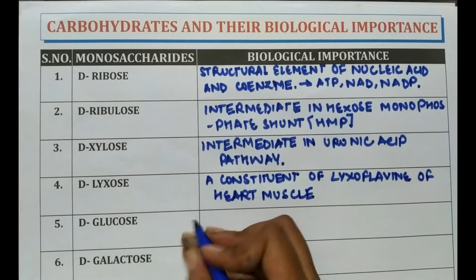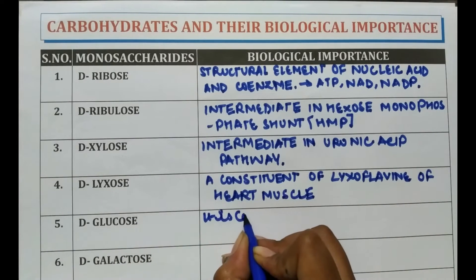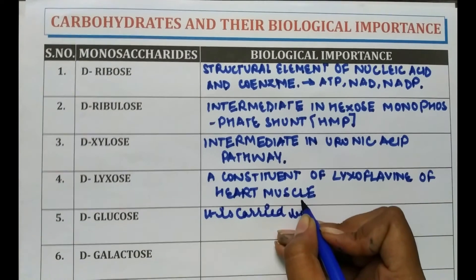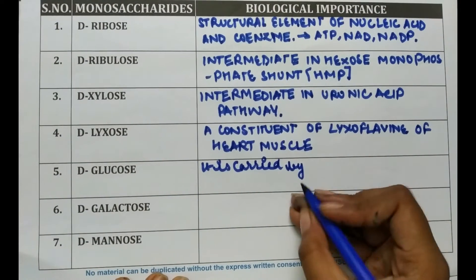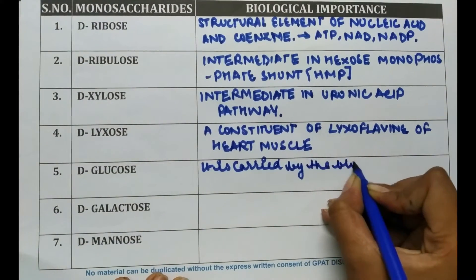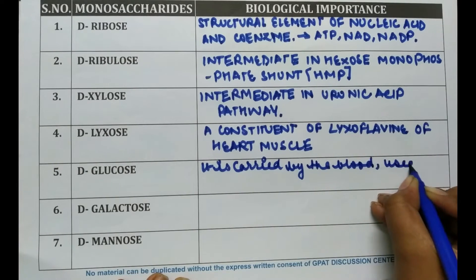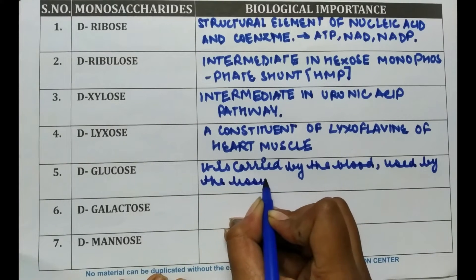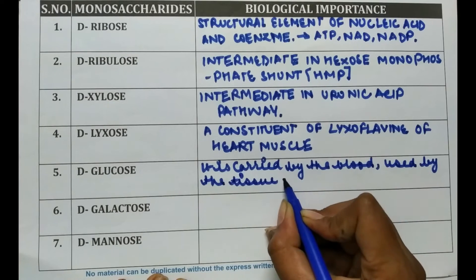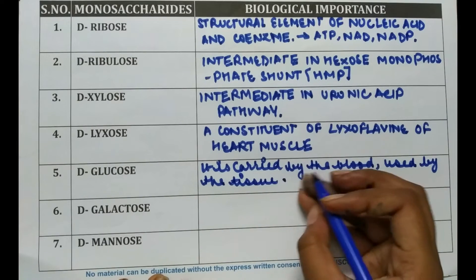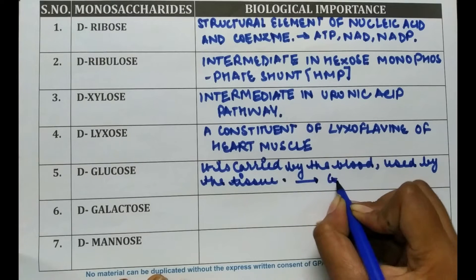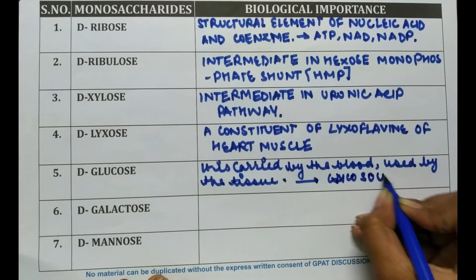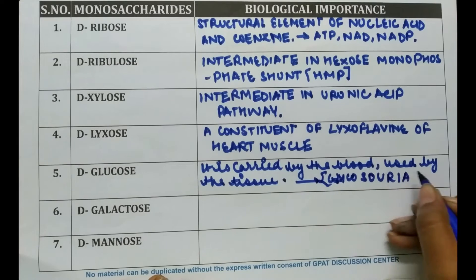D-glucose is carried by the blood and is used by the tissues. When D-glucose is present in urine, it causes glycosuria.